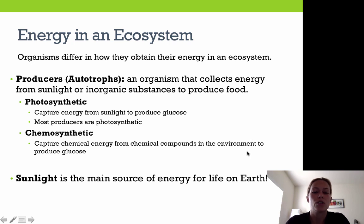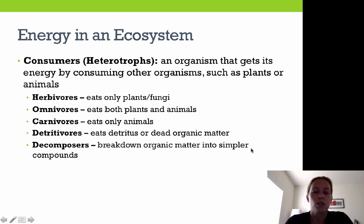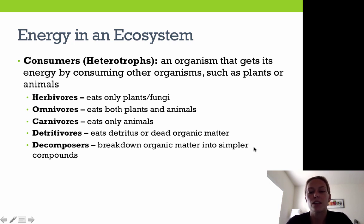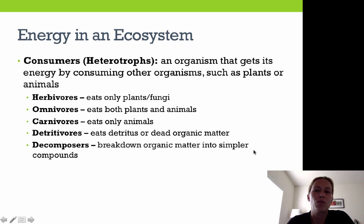Ultimately, sunlight is our main source of energy for life on Earth. Consumers, or heterotrophs, are organisms that get their energy by consuming other organisms, either plants or animals. There are different types of consumers: herbivores eat only plants or fungi; omnivores eat both plants and animals; carnivores eat only animals; detritivores eat detritus or dead organic matter; and decomposers are responsible for breaking down organic matter into simpler compounds and recycling that matter back into the ecosystem.